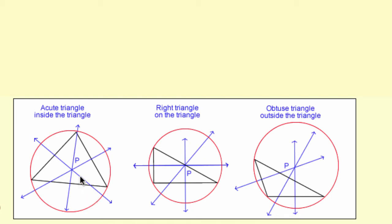It's called the circumcenter because with that point you can circumscribe or draw a circle around the triangle and it intersects all three vertices.